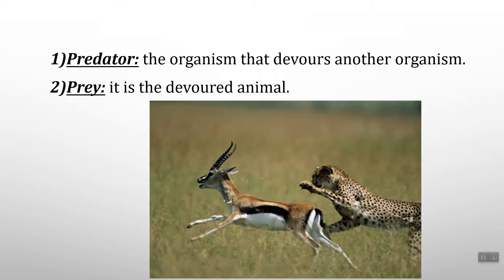In predation, we distinguish the predator and the prey. The predator — such as a tiger — is the organism that devours another organism. The prey is the animal that is devoured. The one that devours is called the predator, and the one that is devoured is called the prey.